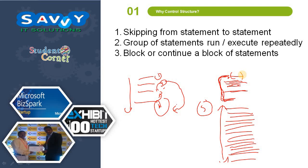The third parameter is block or continuing a block of statements. The block of statements are running. Whenever a certain condition occurs, we come out of the block, or if you restart and continually execute, the process is called block or continuing a block of statements.